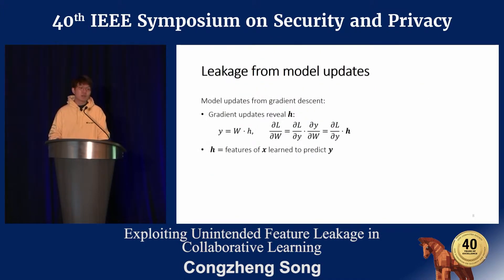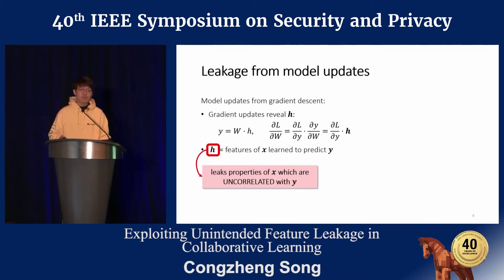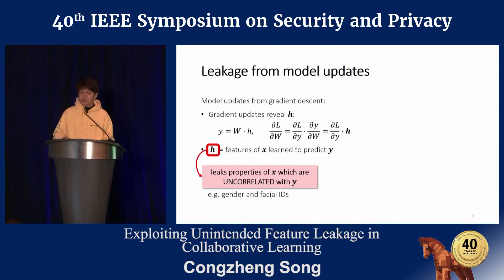Model updates are computed from gradient descent, and we find that gradient updates can leak h — the features of the input data learned by the model to predict output y. For example, suppose y equals the parameter times h; the gradients of the parameters equal a scaled version of the features by chain rule. Another key observation is that even though features h are learned to predict y, they can also leak properties of the input data uncorrelated with y. For example, if y is gender class for a gender classification task, the features can also leak properties like facial IDs.